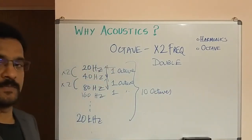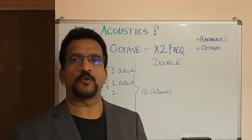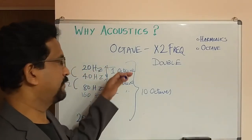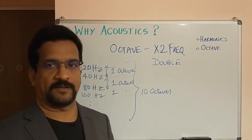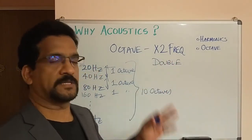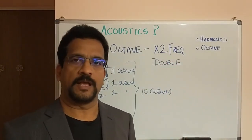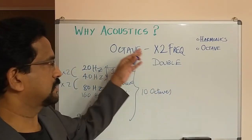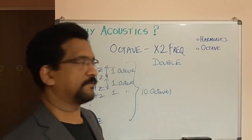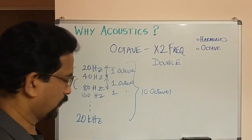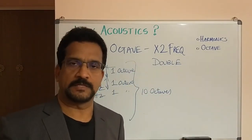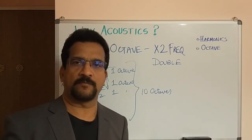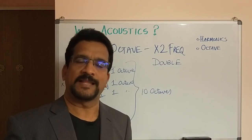The audio frequency range that human ears can listen to — 20 Hz to 20 kHz — consists of 10 octaves. Harmonics and octaves are very important in acoustics and also widely used in music, such as in pianos and other instruments. I hope you enjoyed this session. If you liked it, please click the thumbs up and subscribe for subsequent videos. Thanks for watching.